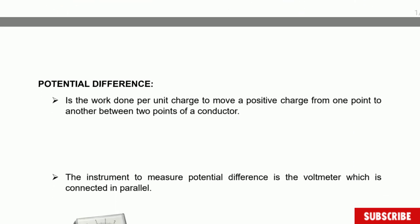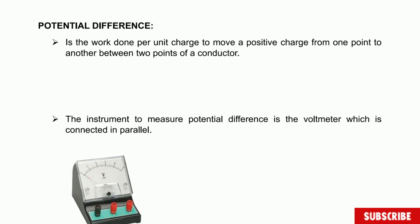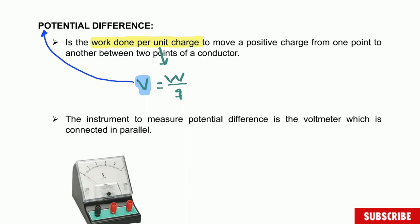Let's go to the next concept, which is potential difference. Potential difference is the work done per unit charge to move a positive charge from one point to another between two points of a conductor. Work done per unit charge translates to W divided by charge Q. This gives us the potential difference. The symbol for potential difference is capital V, also sometimes called voltage.